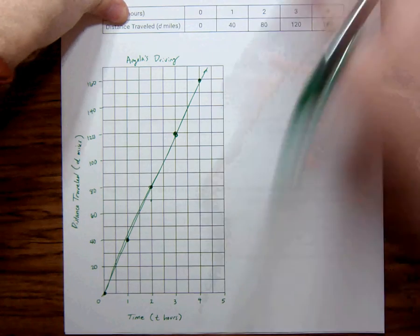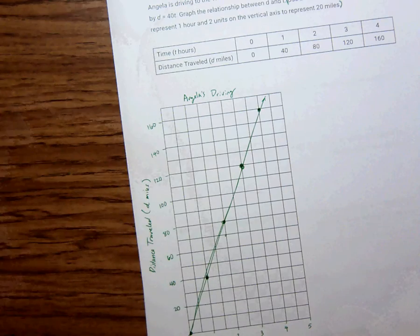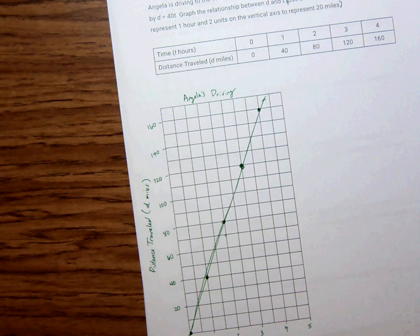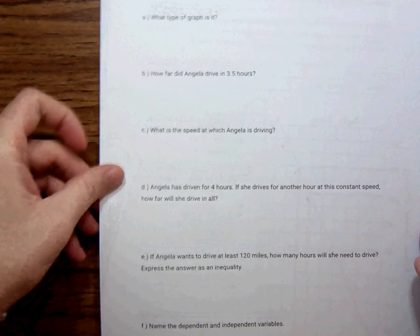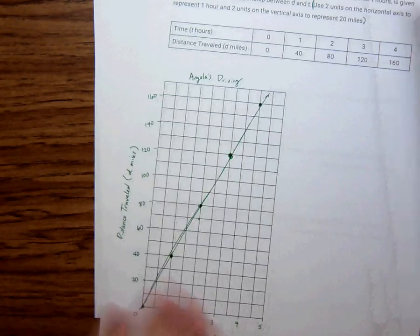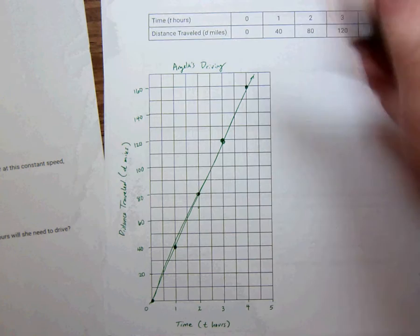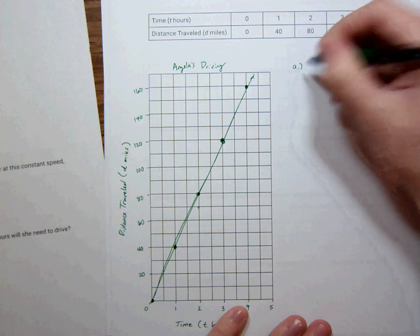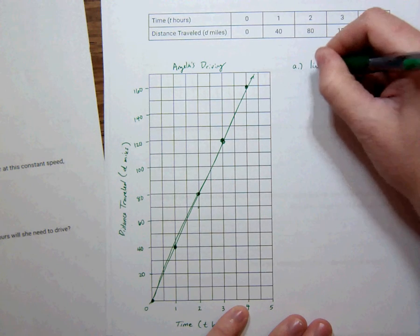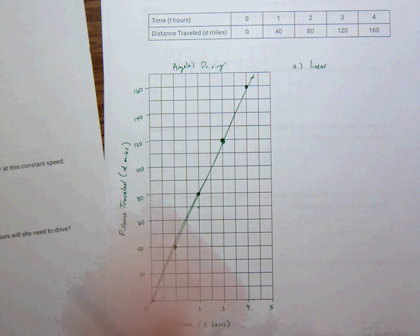So here, I'm going to use this graph to answer some questions about Angela's driving. So the first question is, what type of graph is it? What type of graph is the graph? Every question on our homework is going to be a linear graph. We are working with linear graphs right now. So, A is linear. And that's just something we need to get used to doing.